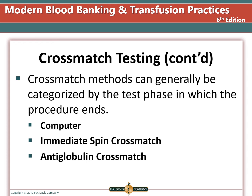The different methods of cross-match are computer, immediate spin, and antiglobulin. The computer cross-match is only allowed when there are two blood types from different samples that match, the antibody screen is negative, and the computer system meets FDA requirements and has been validated. An immediate spin cross-match is used when you have two matching blood types and a negative antibody screen but no capable computer system. An AHG cross-match can detect incompatibility due to both ABO incompatibility and AHG antibody incompatibility.